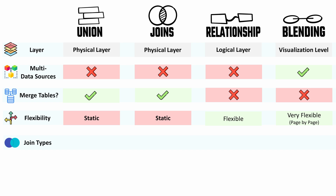Regarding join types: in joins we have inner, left, right, and full. Relationships can provide exactly the same behavior as joins. But in data blending it is fixed — we only have a left join.